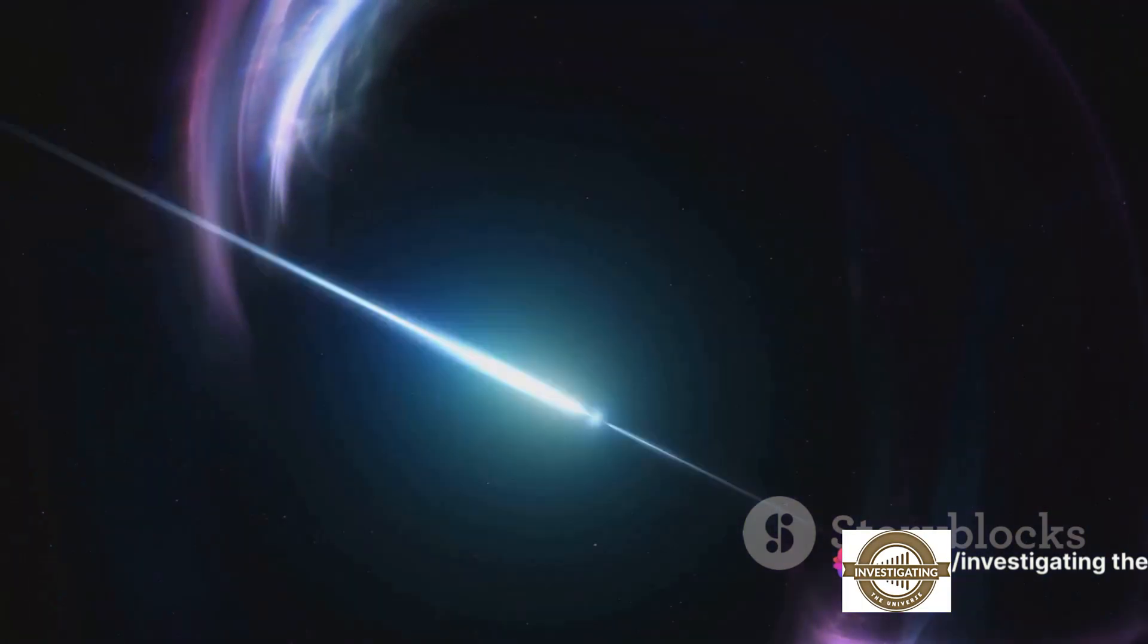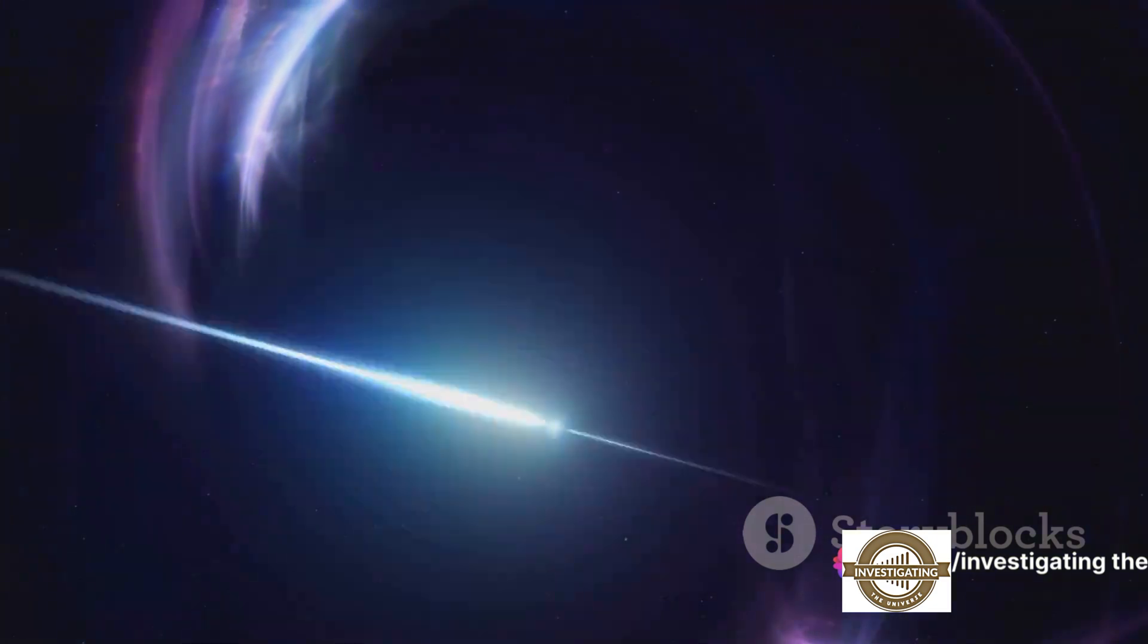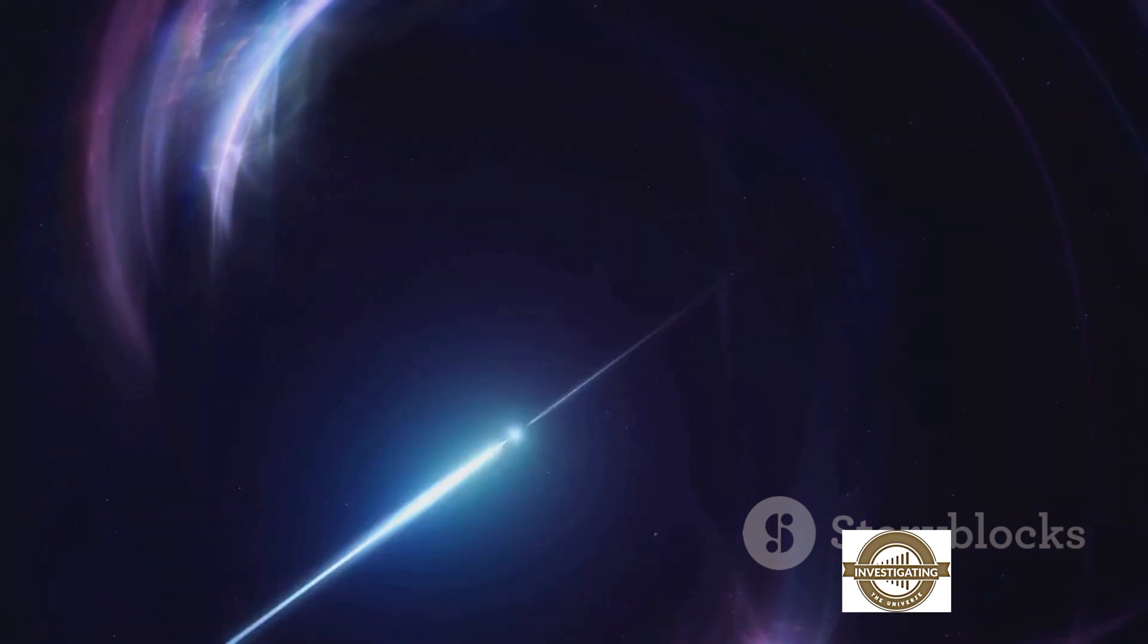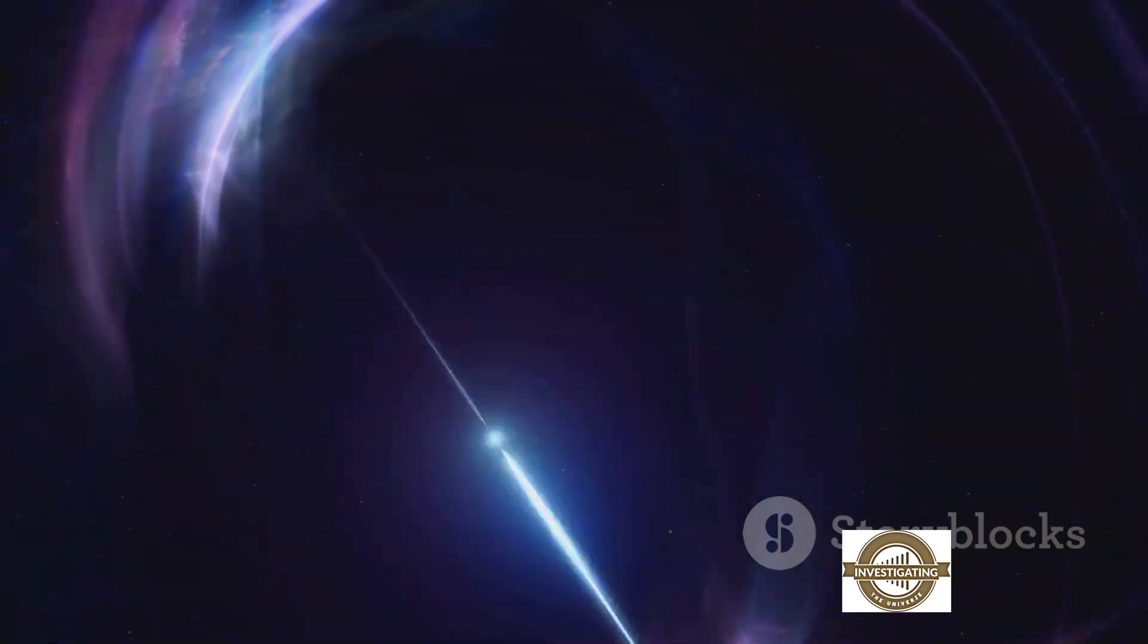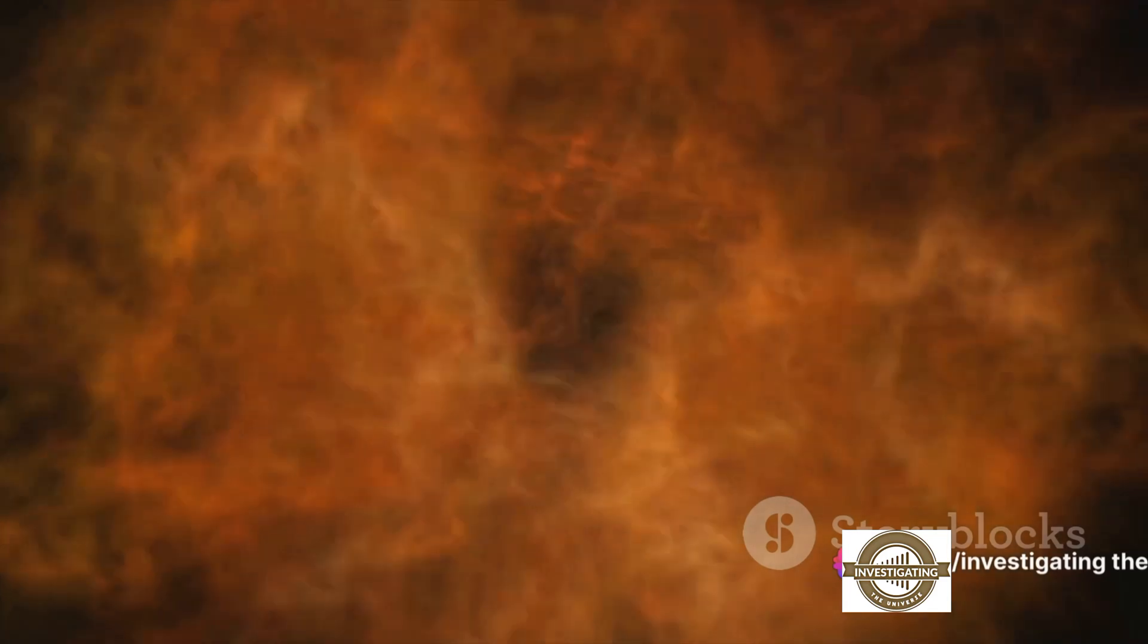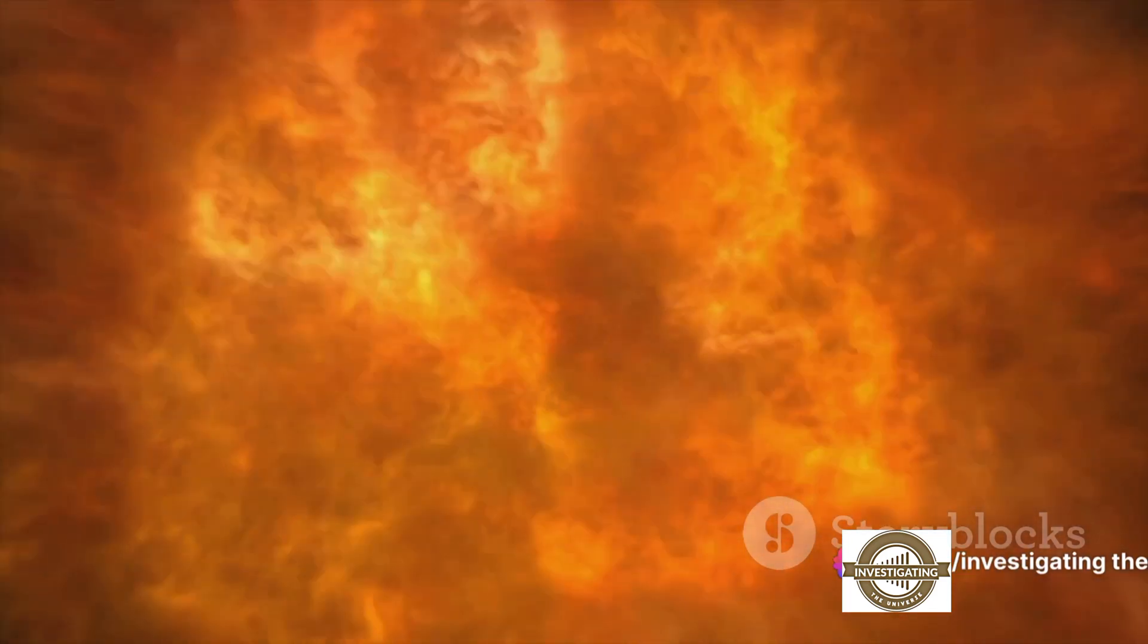This supernova releases a tremendous amount of energy, outshining entire galaxies for brief periods. The remnants of the star either collapse to form a dense neutron star or a black hole, depending on the mass of the original star. The expelled material, enriched with heavier elements produced during the star's lifetime, becomes the raw material for new stars, planets, and possibly life, completing the cosmic cycle of birth, death, and rebirth. So the dazzling end of a star's life, a supernova, is what awaits Betelgeuse.